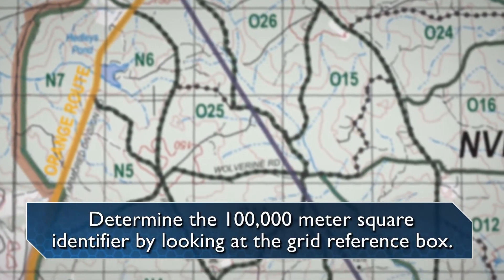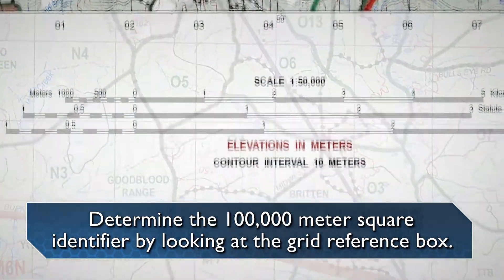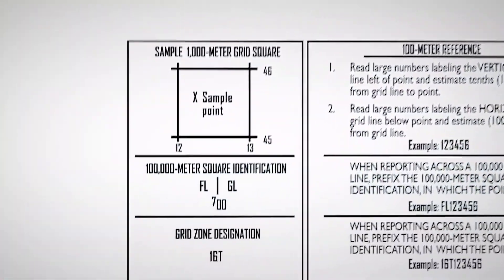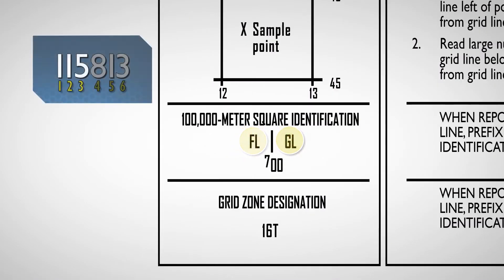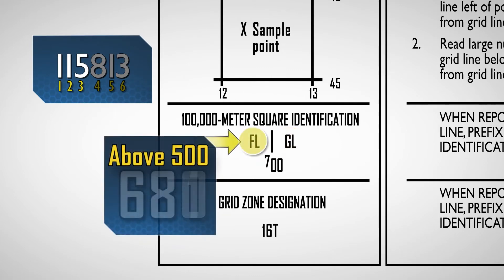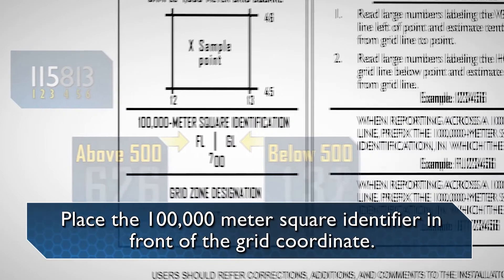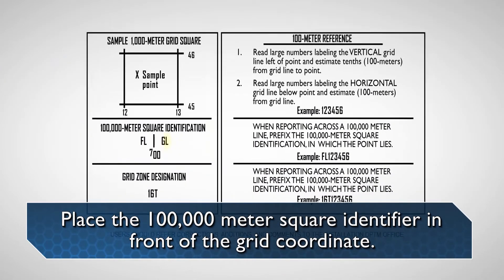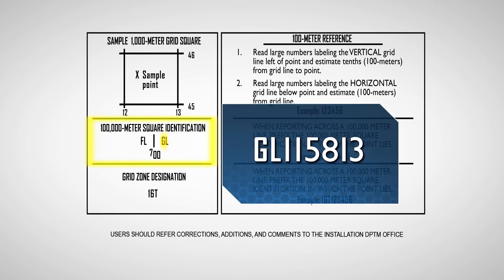Determine the 100,000-meter square identification by looking at the grid reference box in the margin of the map. Whenever a map covers multiple 100,000-meter square identification grids, as shown in this example — Foxtrot-Lima, Gulf-Lima — and the first three digits are above 500, choose the left designator. If the first three digits are below 500, choose the right designator. Place the 100,000-meter square identifier in front of the grid coordinate. In the example given, the grid coordinate becomes Gulf-Lima, 115,813. Further location precision can be achieved by using the grid zone designation listed in the map's margin.